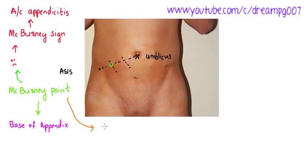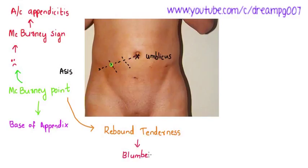Tenderness at McBurney's point is called McBurney's sign and is positive in acute appendicitis. Rebound tenderness at McBurney's point is called Blumberg sign. Rebound tenderness means the tenderness occurs in the patient when we are removing the hand from McBurney's point.